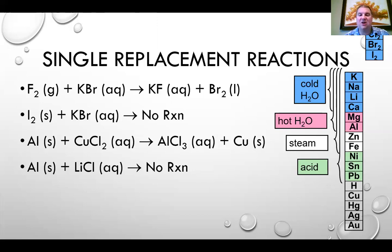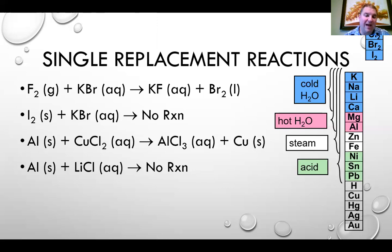Everything below hydrogen on the activity series is not able to replace hydrogen at all — not in acid or water. Similar to the halogens, all of these metals can replace each other as long as they are higher on the activity series. For example, aluminum solid and copper chloride in solution: aluminum is higher than copper, so aluminum replaces copper in that chloride compound, forming aluminum chloride and kicking out elemental copper. Whereas aluminum cannot replace lithium, since lithium is above aluminum.